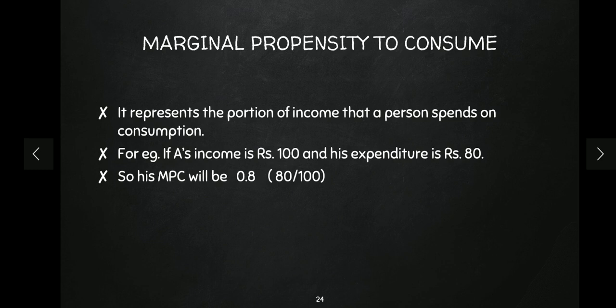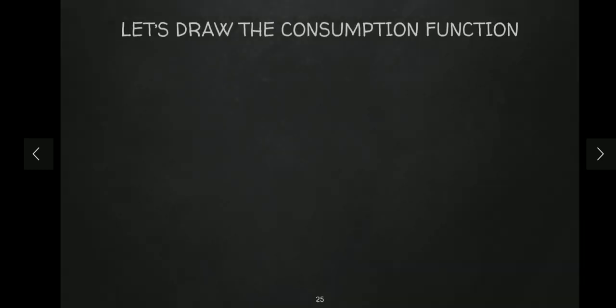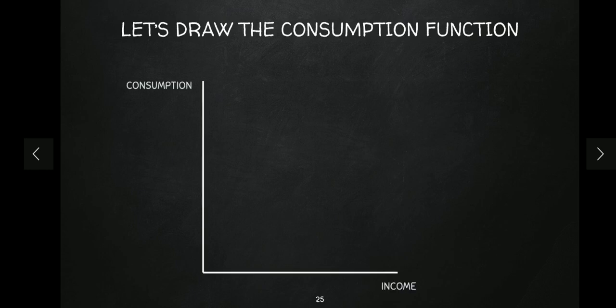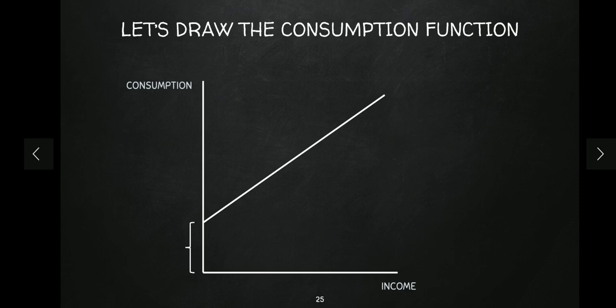Now let's draw the consumption function on a graph. On the x-axis we have level of income and on the y-axis we have consumption. Since consumption is a function of income and increases as income increases, it is a positive function, meaning an upward sloping line. You might wonder why the consumption line does not start from the origin — because at zero level of income, some consumption still exists. Starting from the origin would imply zero consumption at zero income, which is not true.